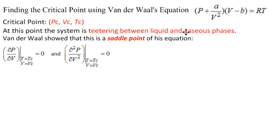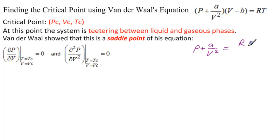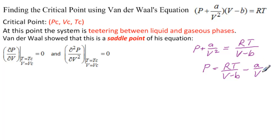The first thing we need to do is solve his equation for P and then take the partials with respect to V. Solving this equation for P, we get P plus A over V squared equals RT divided by V minus B, so P equals RT over V minus B, minus A over V squared. Notice that V, which we're going to take the derivative with respect to, appears in both terms.